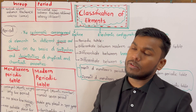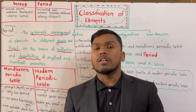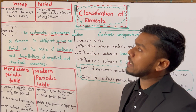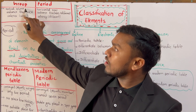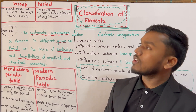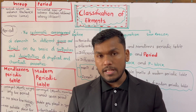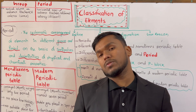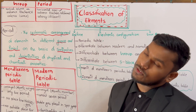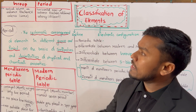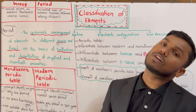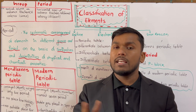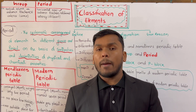Given the period — given the group — the vertical column is a group, and the horizontal row is a period. The vertical column is a group — and the horizontal row is a period. The difference between group and period: the valence electron — the balance electron — is the same in a group, and the balance electron increases across a period.